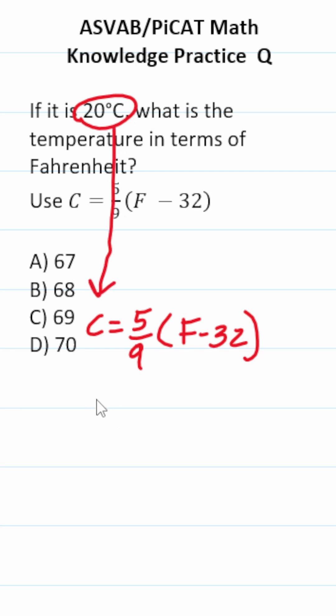Plug in 20 for C and then solve for F. Let's go ahead and do that. This becomes 20 equals 5 over 9 times F minus 32.